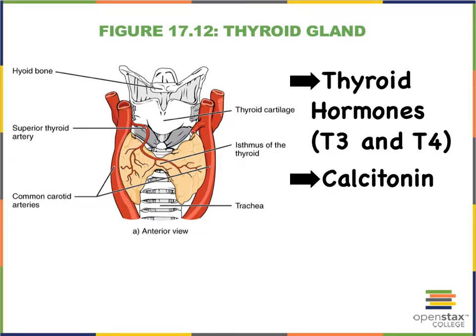The thyroid gland is a bilobed gland — two lobes interconnected by something called the isthmus. It's a very vascularized gland, such that surgery on the thyroid gland is quite bloody. It sits nearby the thyroid cartilage, more inferior to it.